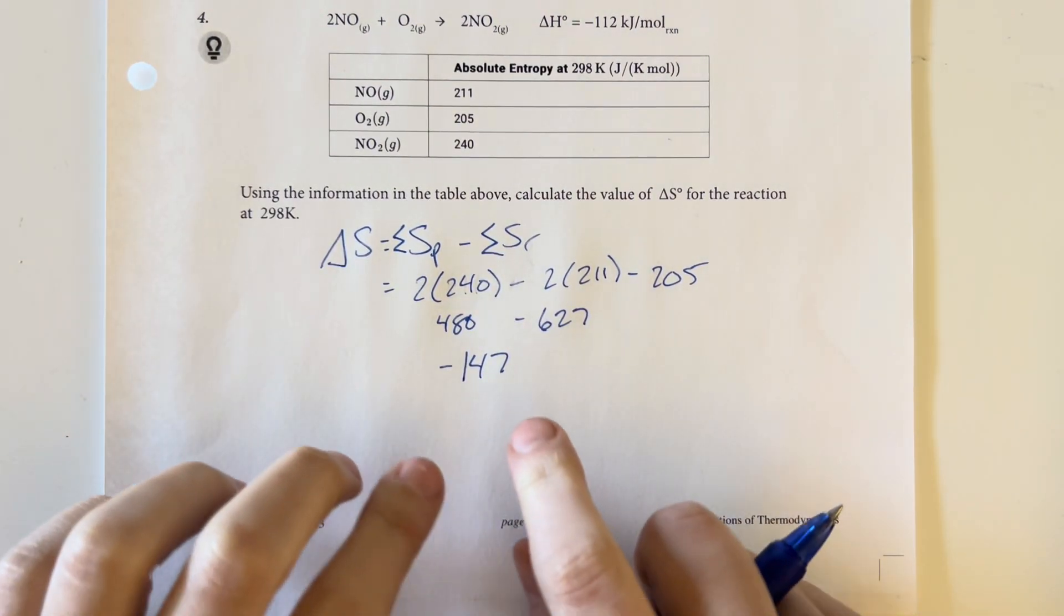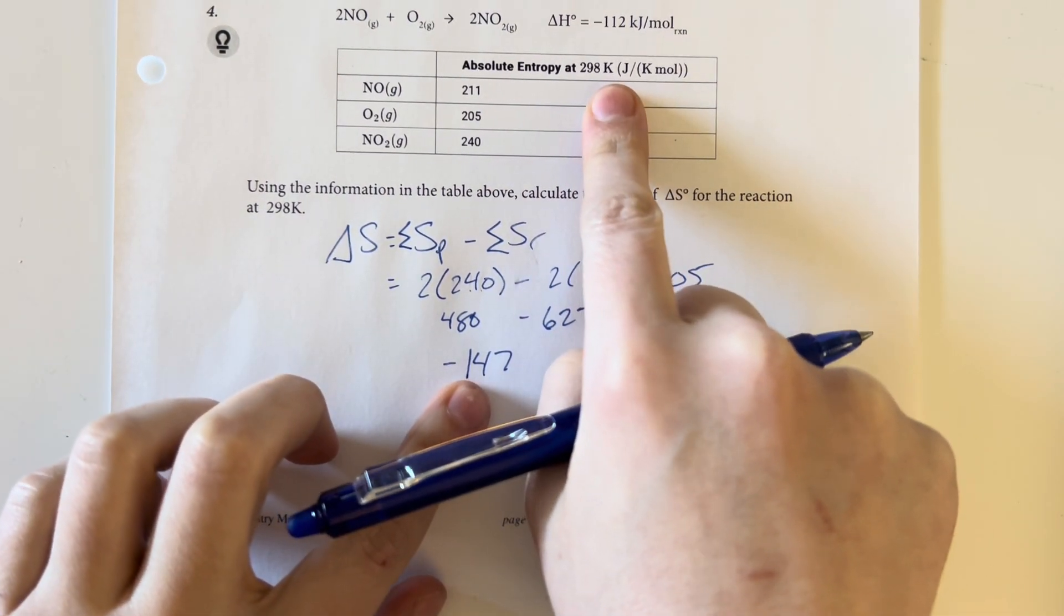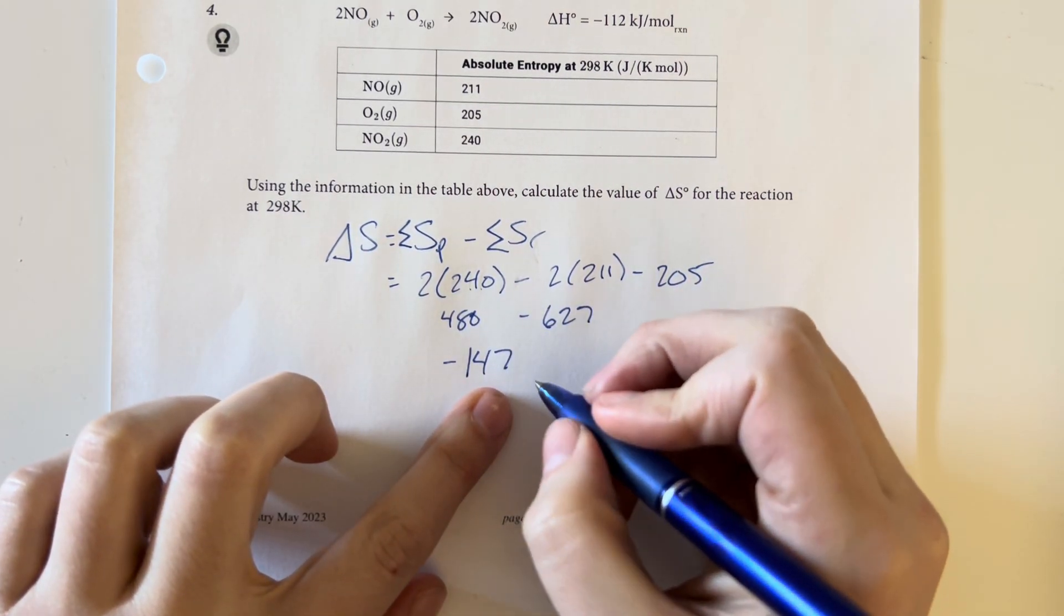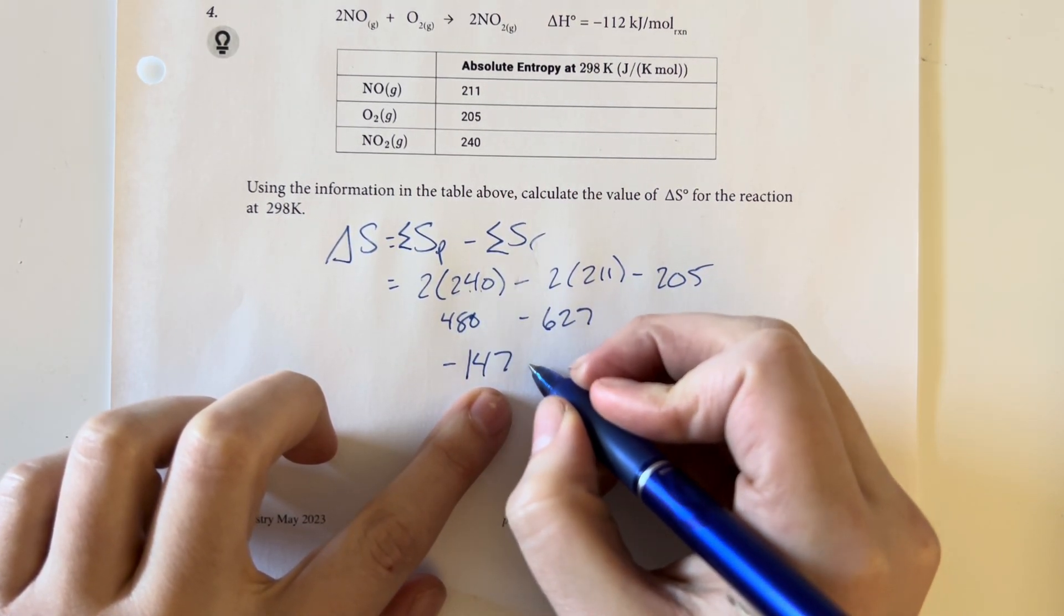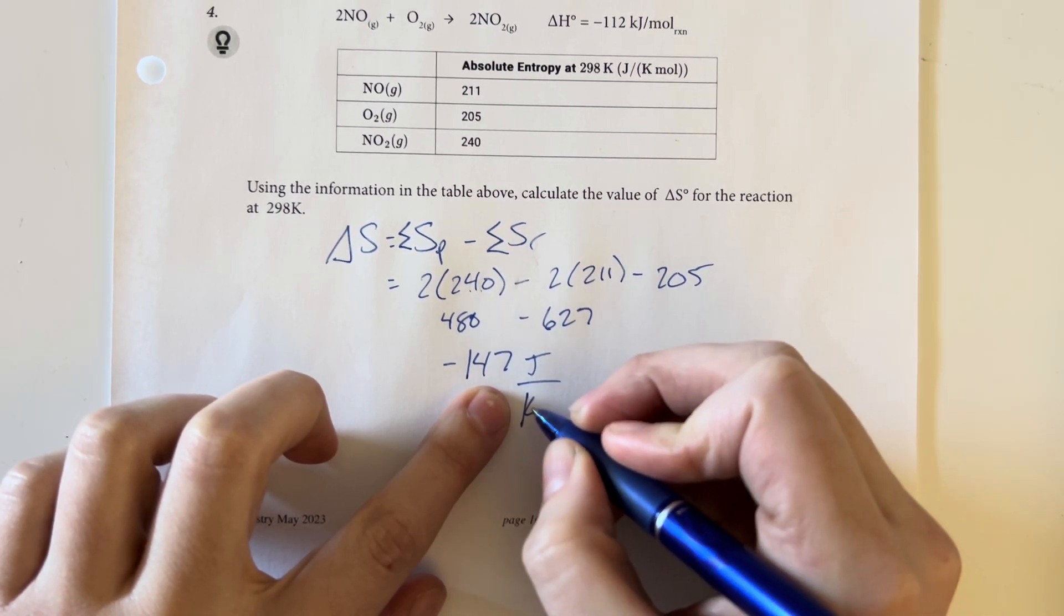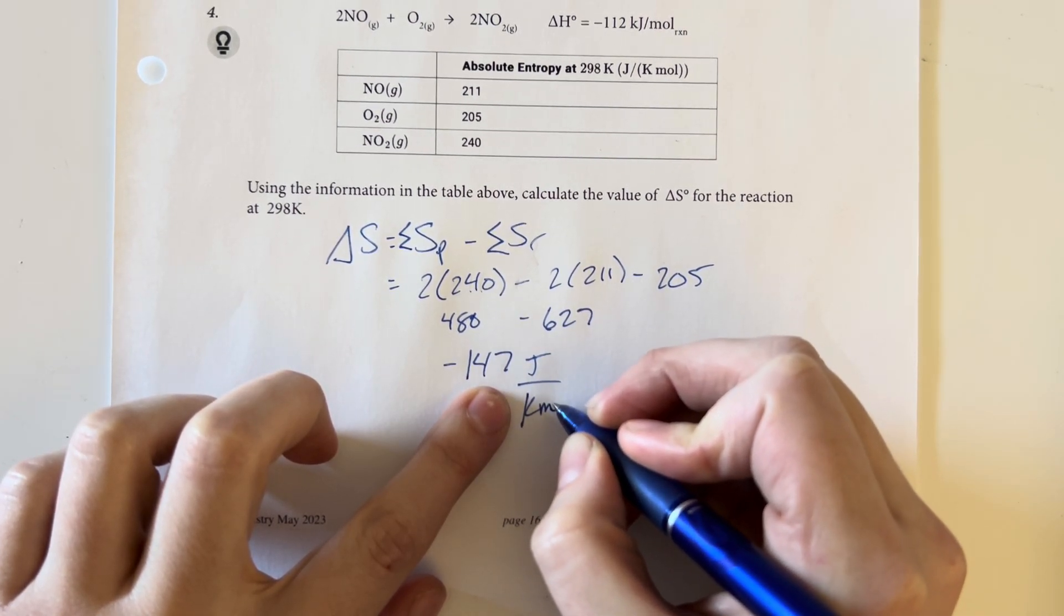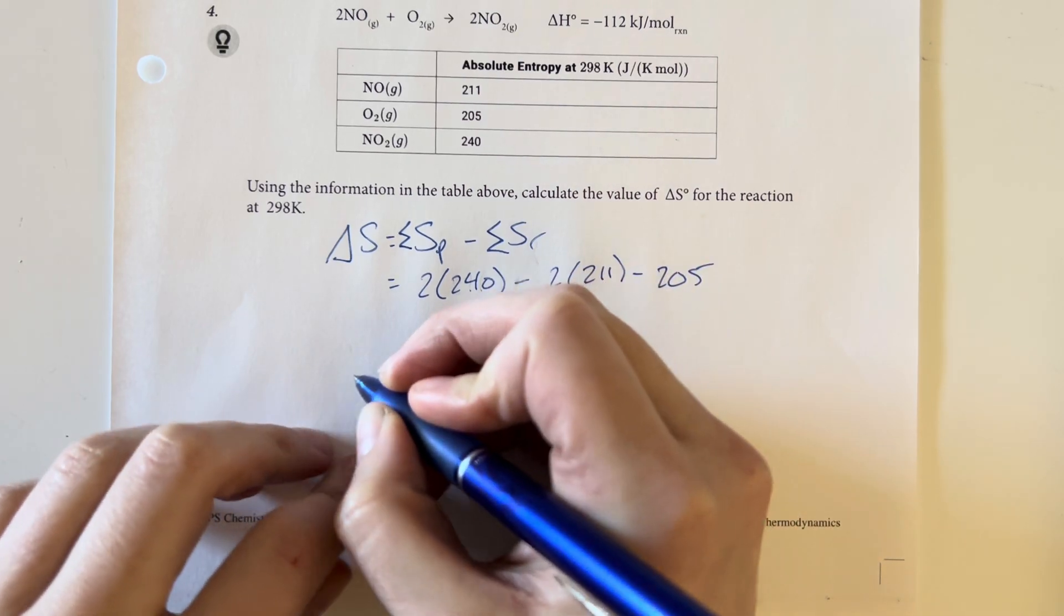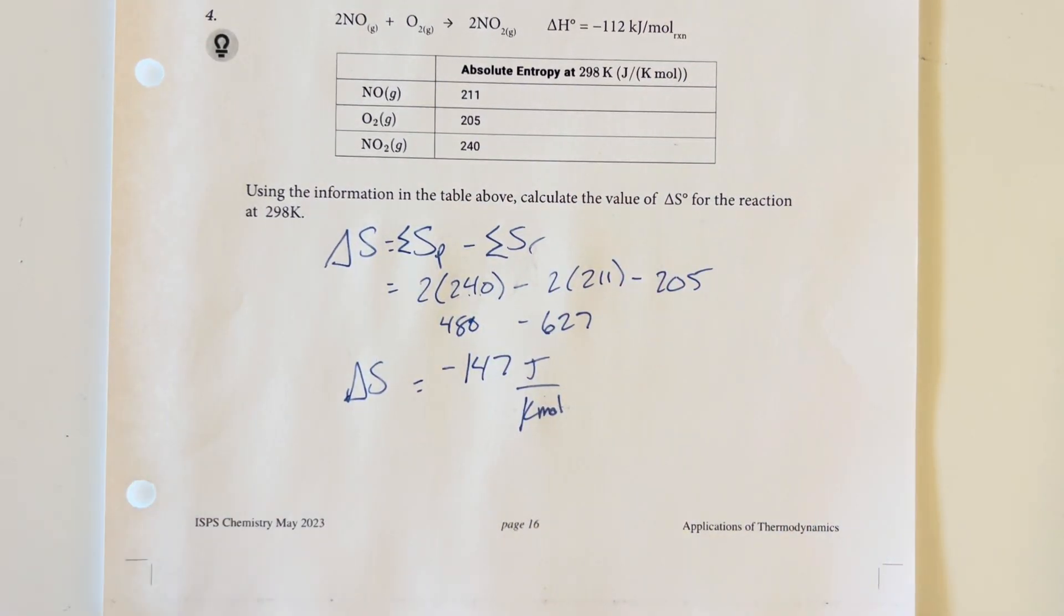We will need to make sure that we include the units, since this is free response. We will not get all of our credit if we don't include units, so make sure that you do that. Joules per Kelvin mole is going to be equal to my delta S for this reaction.